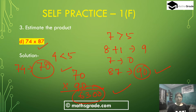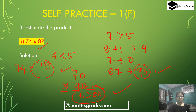And 6,300 is the answer. So estimating the product, 74 multiplied by 87 is 6,300.